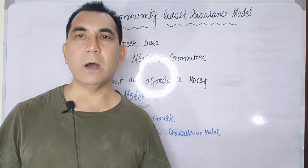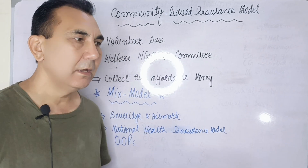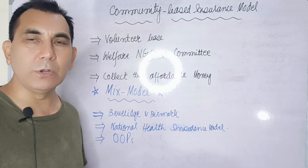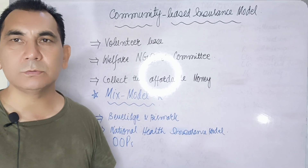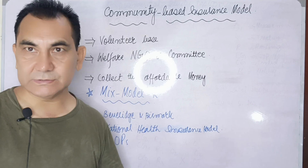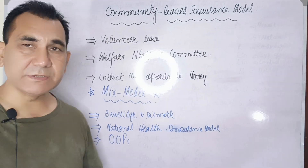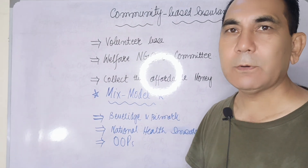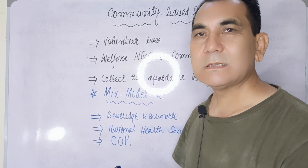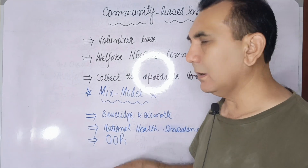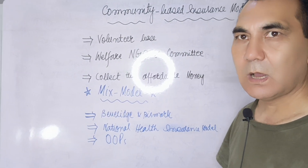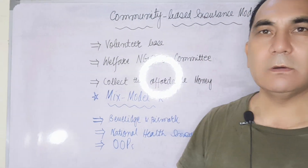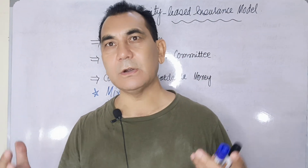Some people who are economically sound are getting healthcare access through out-of-pocket payments, paying from their own money for healthcare services. This mixed model runs in different countries where different types of models operate simultaneously in parallel. I hope today's lecture has clarified your concepts about the community-based insurance model and the mixed model running in different countries.